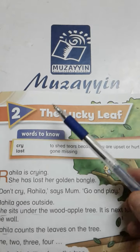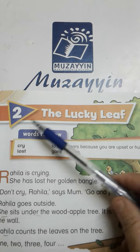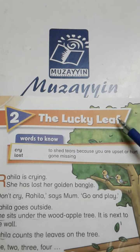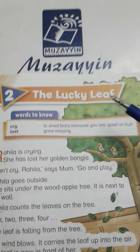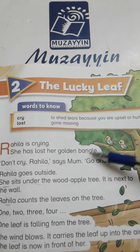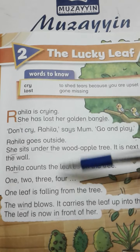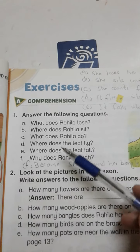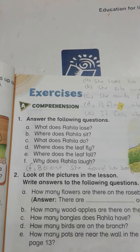So students, in today's online class we have completed the reading of Unit Number 2, The Lucky Leaf, and we have solved the exercise. For home assignment, you have to read this unit, The Lucky Leaf, at least twice at home. Write the fill in the blanks in your book and write the question answers in your notebook, and you have to learn the question answers. So till next class, stay happy and blessed. Allah Hafiz.